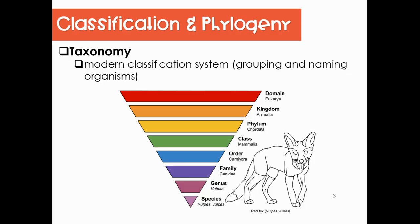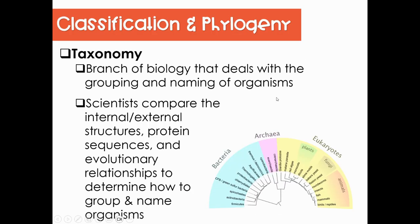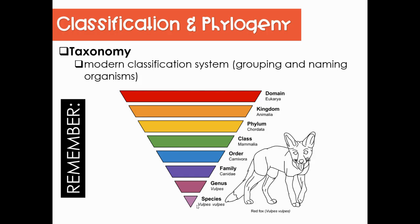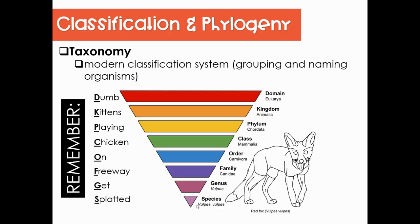The modern classification system for grouping and naming organisms is called taxonomy. Starting with the most broad category — domains — and breaking down into kingdoms, phyla, class, order, family, genus, and then the most specific: species. A good way to remember the order from most broad to most specific is the sentence: 'Dumb kittens playing chicken on freeway gets splatted.' You will have a question on your end-of-course assessment requiring you to know this order, so memorize that sentence.